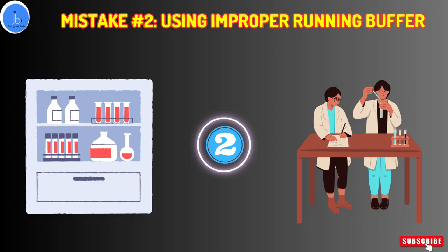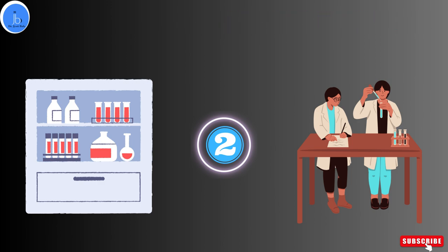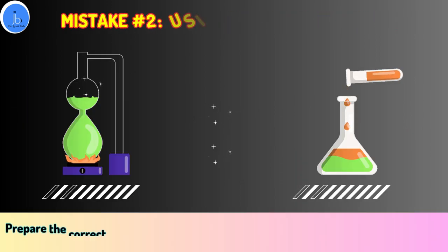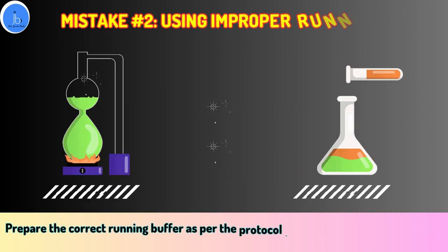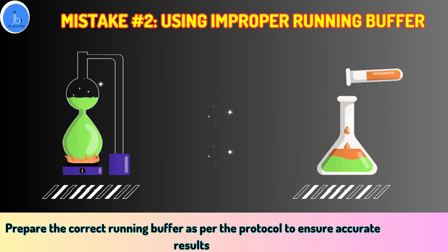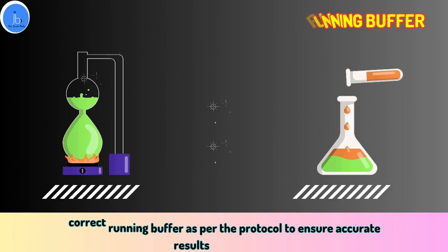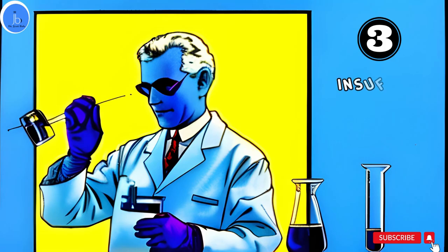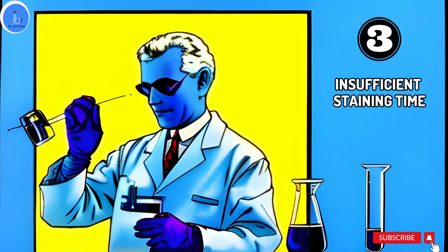The second mistake is using an improper running buffer. Using the wrong running buffer can affect the separation and migration of the protein. Make sure to prepare the correct running buffer as per the protocol to ensure accurate results.